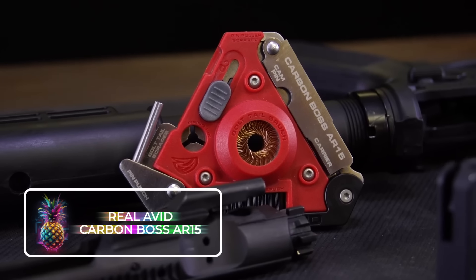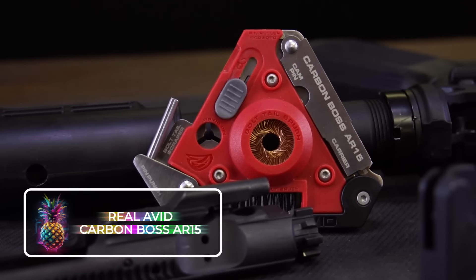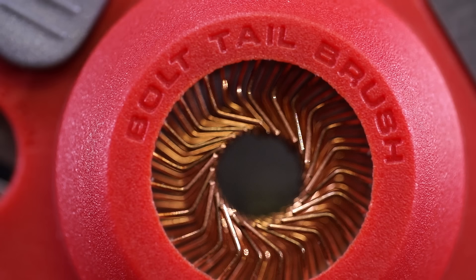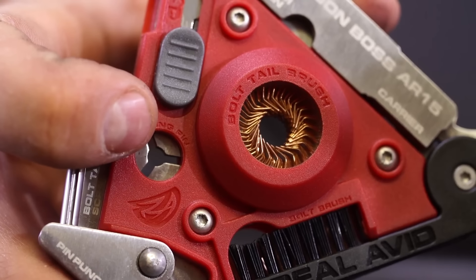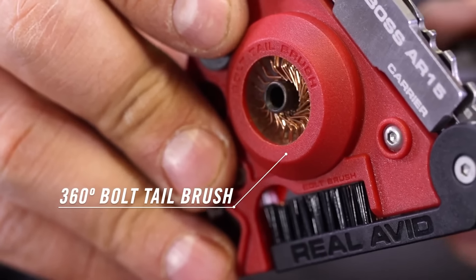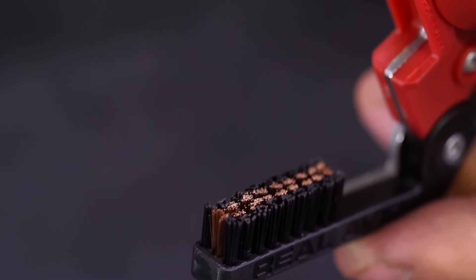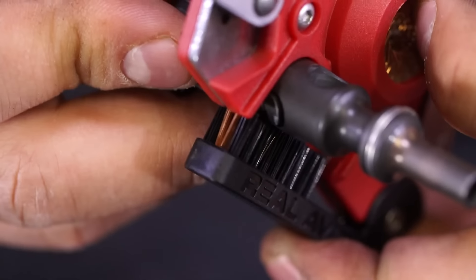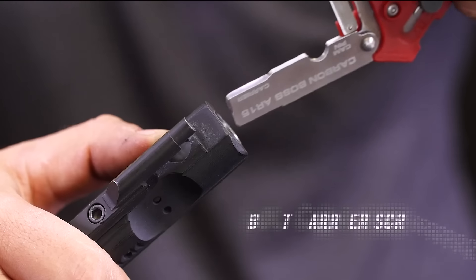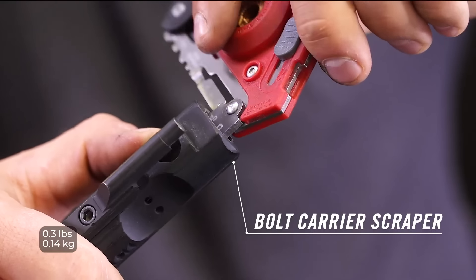Real Avid Carbon Boss AR-15. First up, something for your gun. The Real Avid Carbon Boss AR-15 has been made to help you when it's time to clean your AR-15. Inside its sleek casing you'll find everything you need for a thorough cleaning session. This compact multi-tool is packed with over 10 essential tools, and owning one is like having a mini workshop at your fingertips.